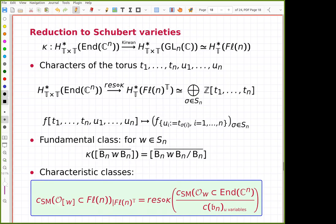From these formulas one can deduce the formulas for Chern-Schwartz-MacPherson classes and motivic Chern classes of Schubert varieties in the flag variety, because taking the quotient you just divide these classes by the tangent direction to the orbit.